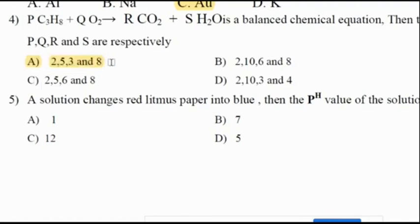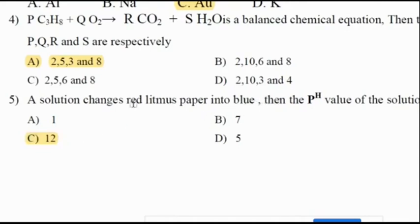Option A is the correct answer for the fourth question. Fifth question: a solution changes red litmus paper to blue, so the pH value of the solution is 12. It is a base. If the pH value is more than 7, it is a base. Only a base can convert red litmus paper into blue.